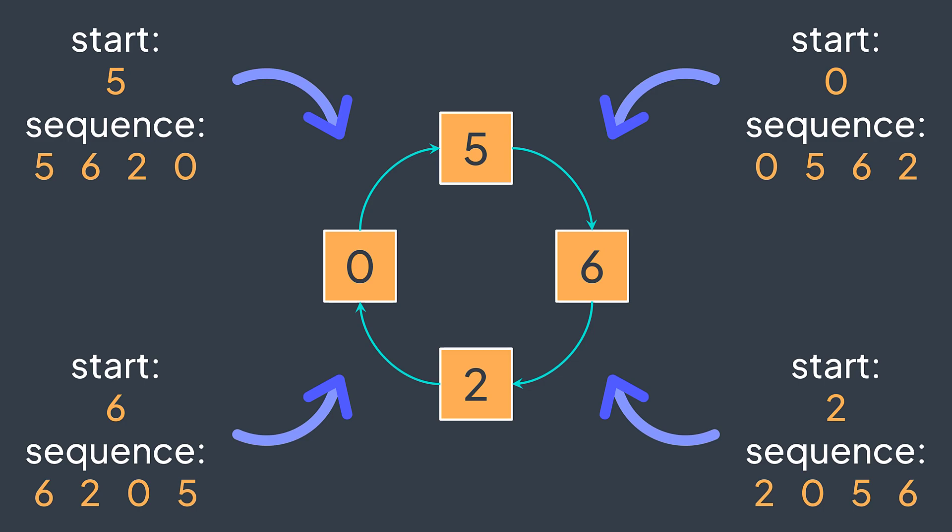We deduce that once we visit an element while creating the sequence, it's useless to start from it later because we get the same sequence. So the idea is that we use a set of visited elements. And before searching for the sequence starting with the actual element, we first make sure that it's not visited yet to avoid repeating the same work uselessly.